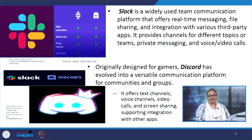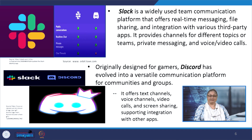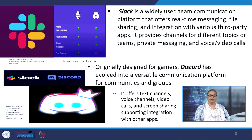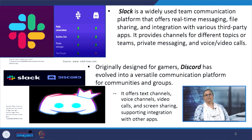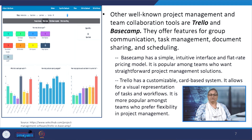In addition to popular apps like Telegram, Microsoft Teams, Google Meet and Zoom, let us also explore some other options for online collaboration in the workplace. Slack is a widely used team communication platform that offers real-time messaging, file sharing and integration with various third-party apps. It also provides channels for different topics or teams, private messaging, and voice as well as video calls. Discord was originally designed for gamers but has evolved into a versatile communication platform for communities and groups, offering text channels, voice channels, video calls and screen sharing, and supporting integration with other apps.